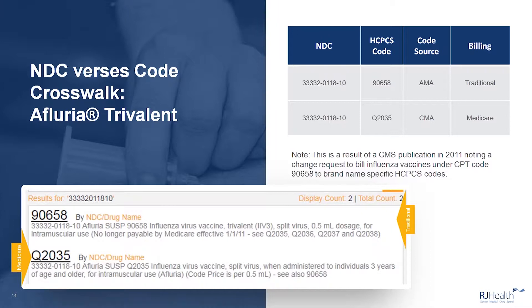So in the example below, you would see the CPT code 90658, but a temporary Q code which is brand-specific to Afluria.